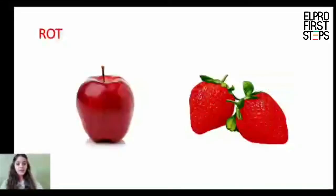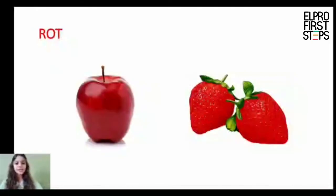Now we will start with the color red. In German you will say rot. Here you can see two examples — strawberry and apple. In German you will say rot.